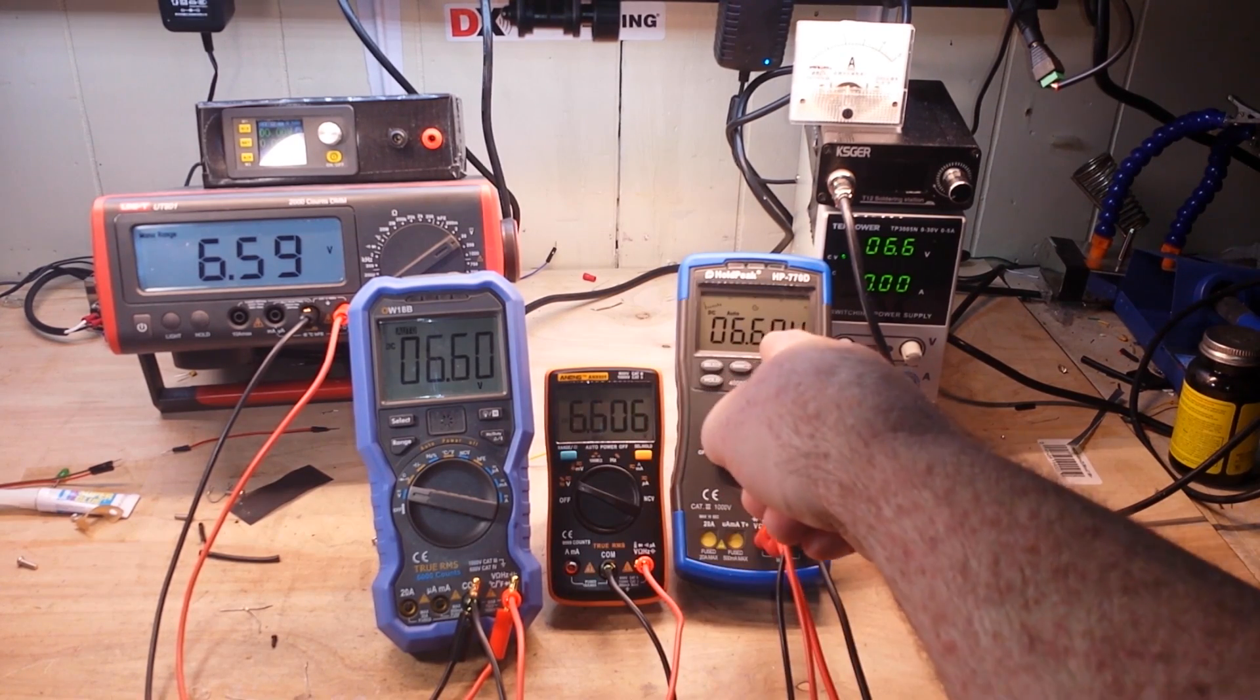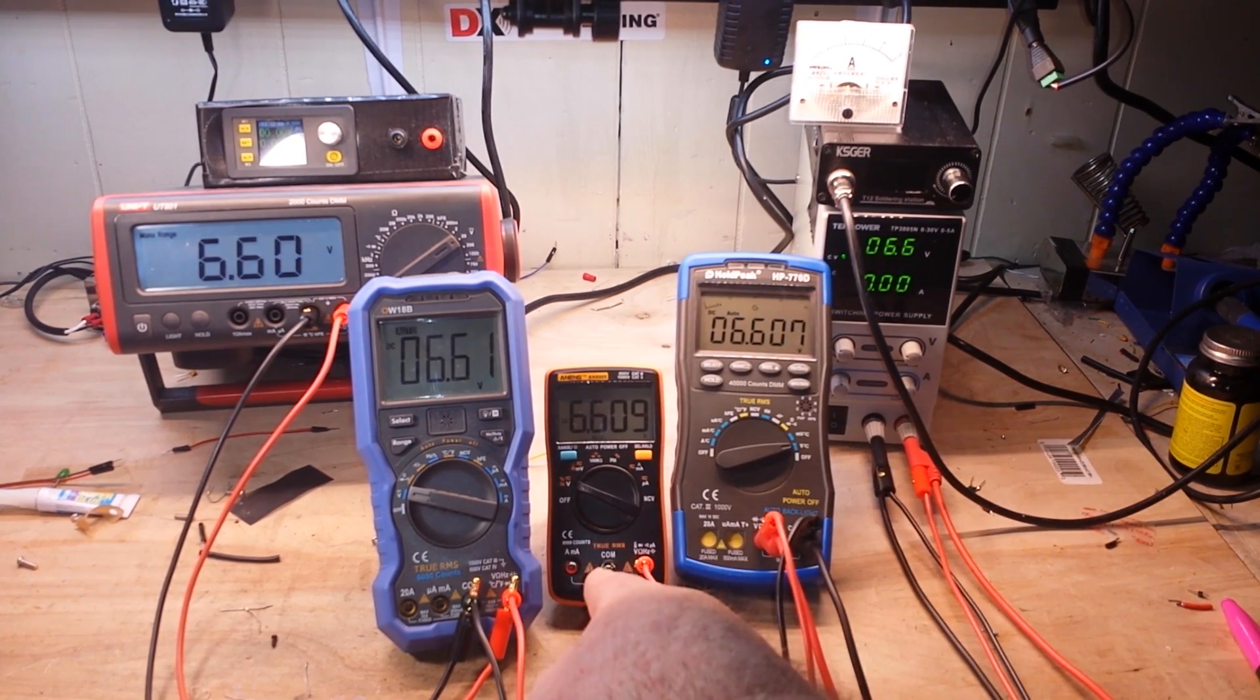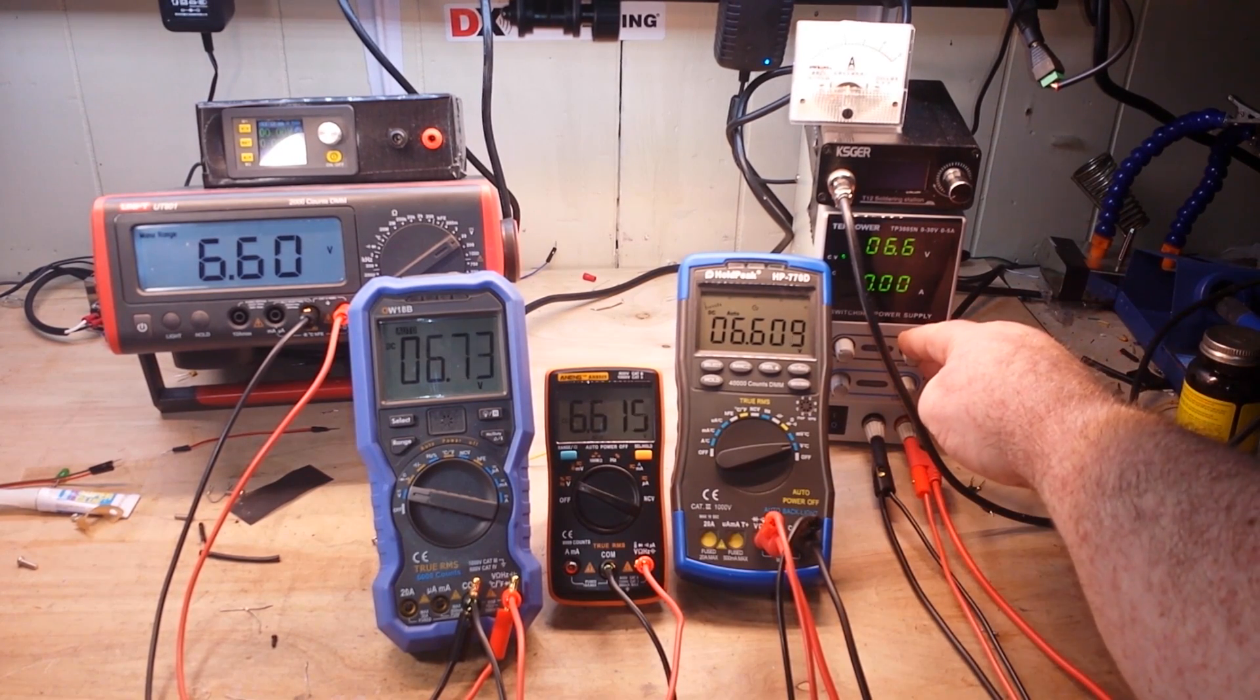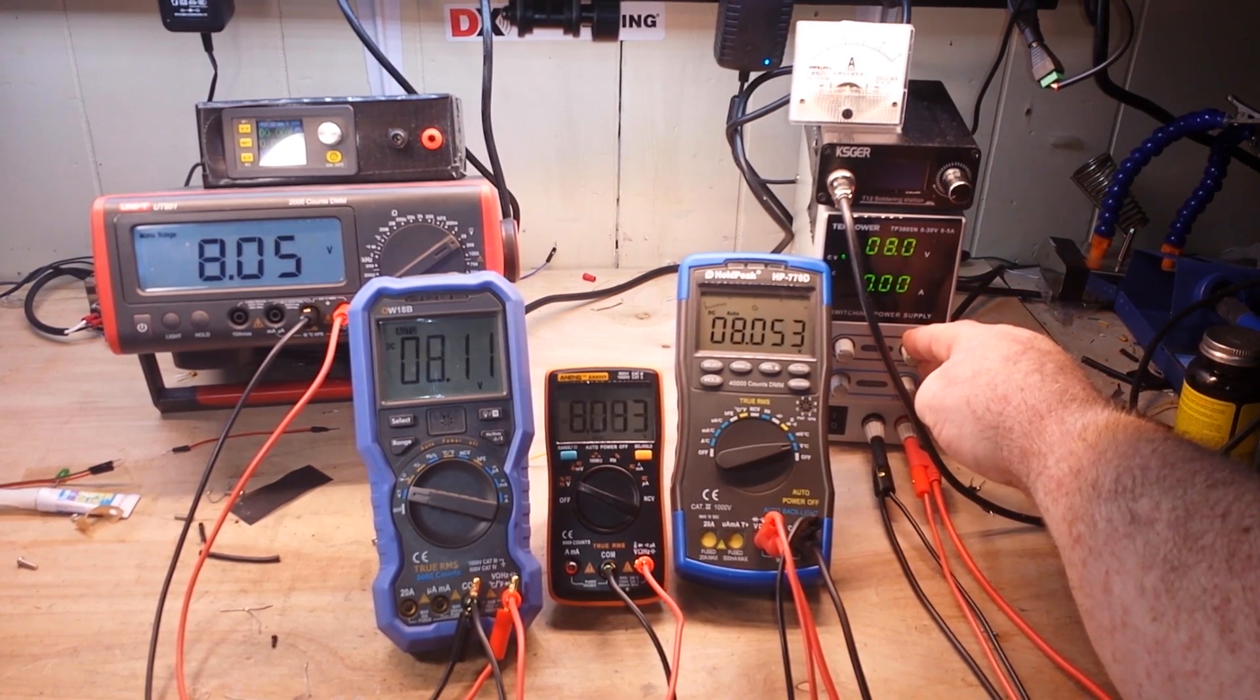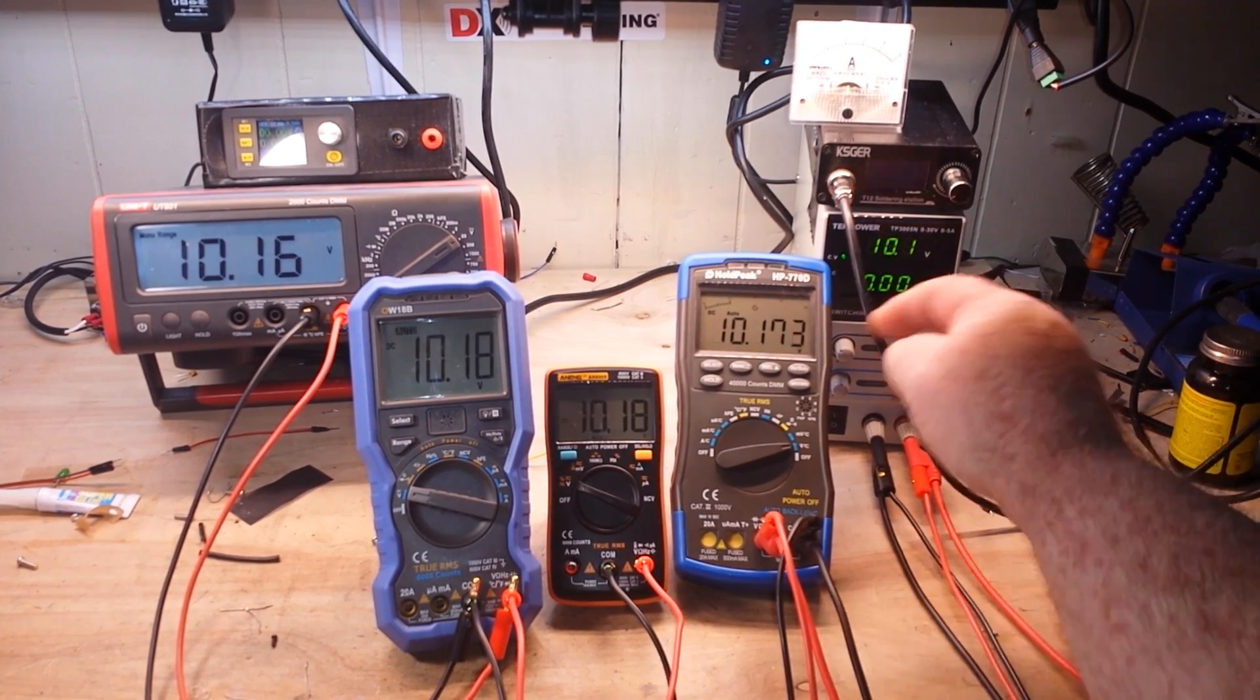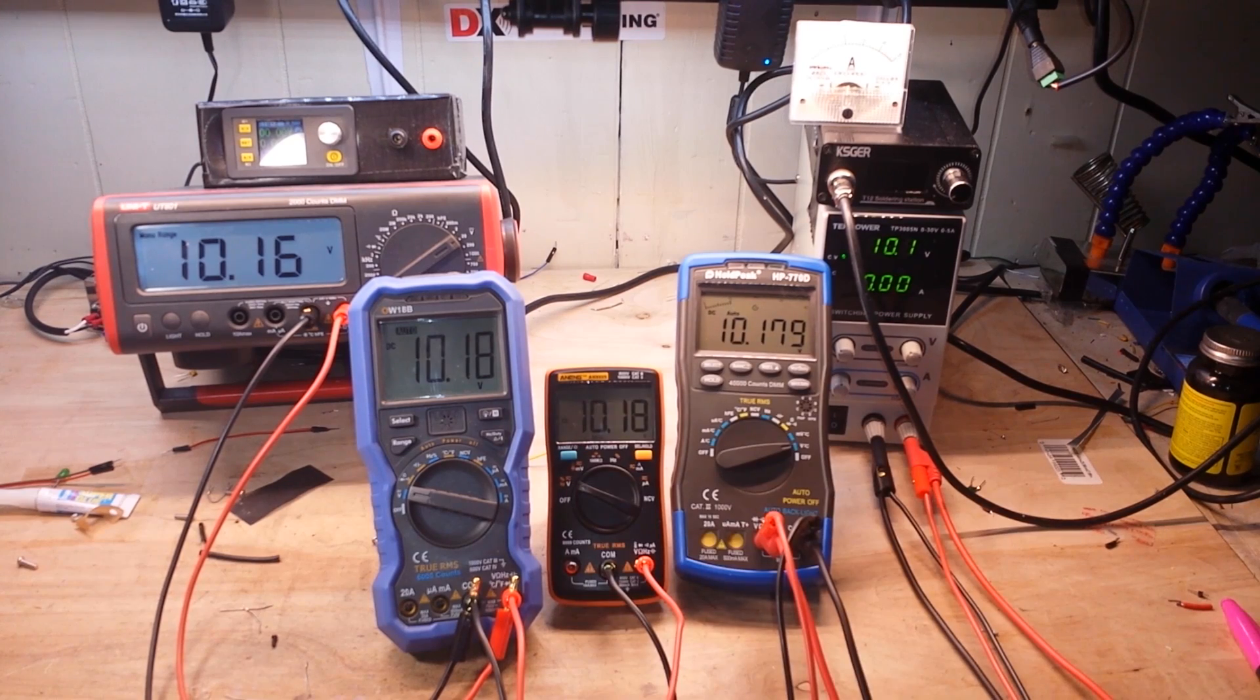Here we are still at three digits. Here we are still at four digits. Now this one, 9999 is the next one and it should switch when we get to 10 volts. Boom. 10 volts, we lose a digit.